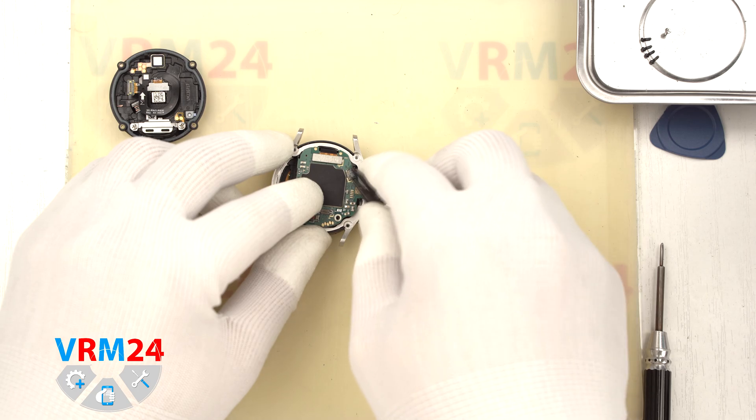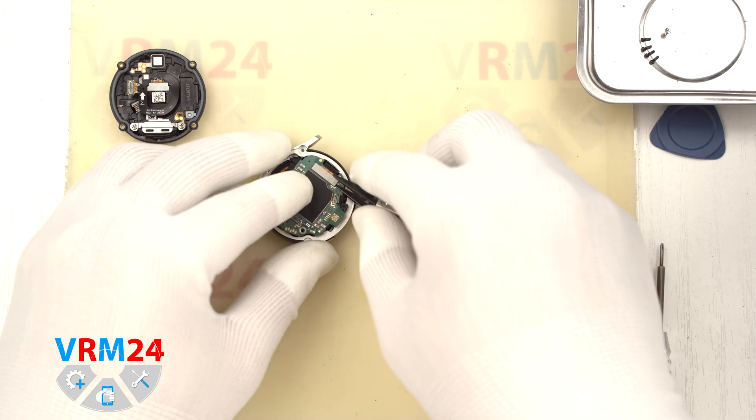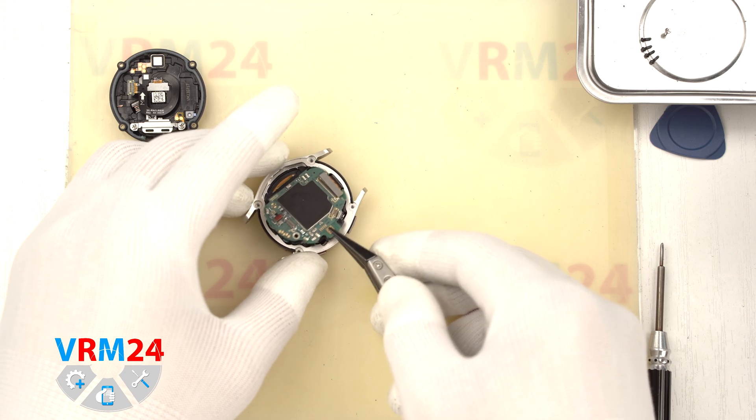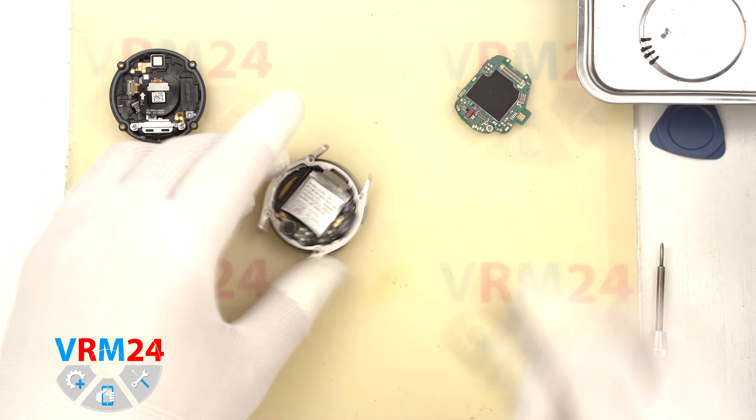We disconnect the side button connector and disconnect the display cable connector. Now we can carefully remove the motherboard, take it out and set it aside.